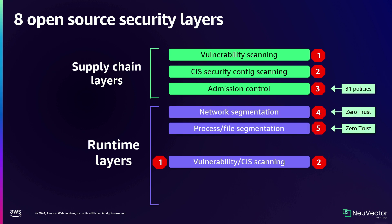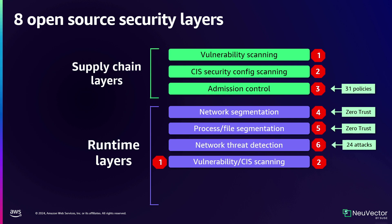Let's get into some of the exciting runtime layers. First, network segmentation and file process segmentation — these are our zero trust layers. We learn the behavior of your application using that network inspection I was talking about earlier, seeing all the network traffic east-west inside the cluster. We build policies from that because we know what the traffic looks like, and we're also doing deep packet inspection — we can see the protocol and validate that protocol. These are layer seven network policies, not the layer three or layer four network policies native to Kubernetes. These are zero trust, meaning when we learn them, these are allow rules — we deny everything else by default. Zero trust is super powerful, and we use that in combination with the network threat detection.